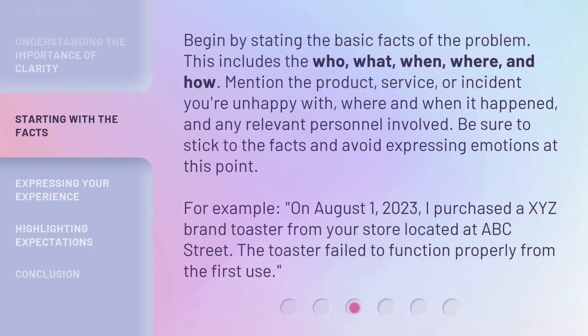Begin by stating the basic facts of the problem. This includes the who, what, when, where, and how. Mention the product, service, or incident you're unhappy with, where and when it happened, and any relevant personnel involved. Be sure to stick to the facts and avoid expressing emotions at this point.